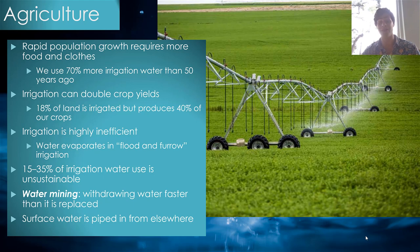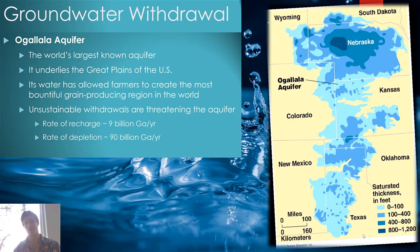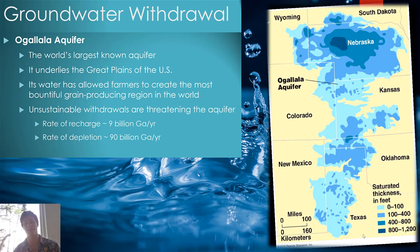The Ogallala Aquifer, also called the High Plains Aquifer, is the world's largest known aquifer. It encompasses at least nine states and the majority of it is in Nebraska. It underlies the Great Plains of the U.S. and has allowed farmers to create the most bountiful grain-producing region in the world — the breadbasket of the United States. However, the problem is that water-intensive grains are being grown in a place that doesn't see a lot of rainfall.